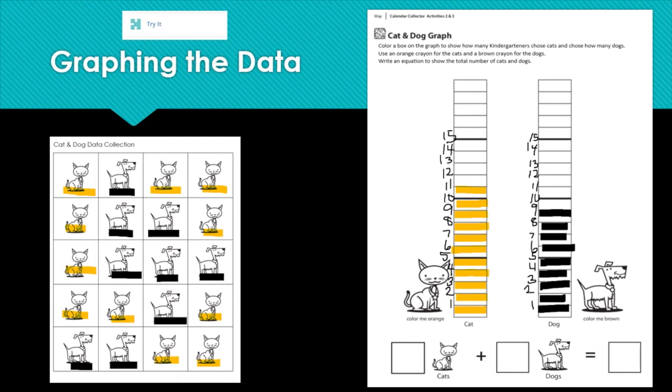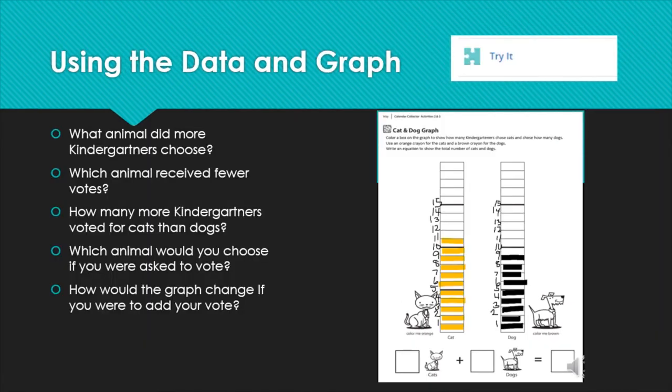We collected the information by doing a survey of the kindergartners. So now we need to compare the kindergartners information about who liked cats more and who likes dogs more. In the try it section, you'll also find questions to answer about the graph you created. Some of the questions you can see on the screen. What animal did more kindergartners choose? You can use the data on the bar graph to answer that question. You can look at the height of the graph to see which one's taller and which one's shorter. You can also compare the numbers to help you.